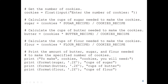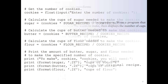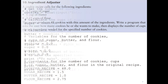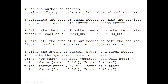Now we can calculate the cups of sugar needed to make the cookies. Based on the question, the formula is: the number of cookies times the sugar_recipe constant, which is 1.5. The cooking recipe calls for 1.5 cups of sugar, 1 cup of butter, and 2.75 cups of flour to produce 48 cookies. So if the user wants 10 cookies, the sugar needed is 10 times the sugar_recipe divided by the cookies_recipe. This calculates the cups of sugar needed to make the desired cookies.